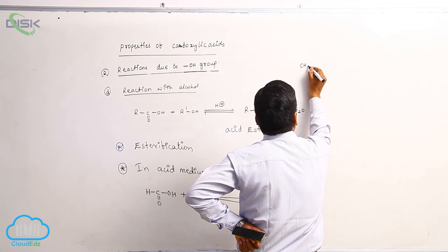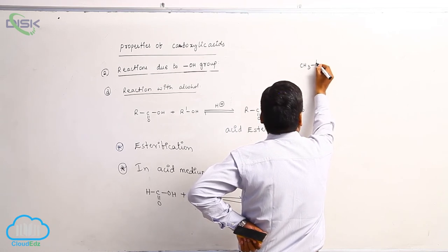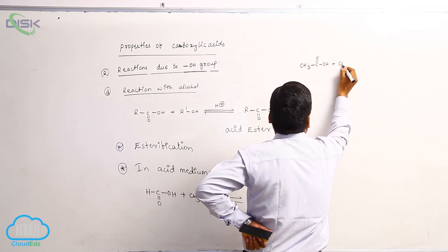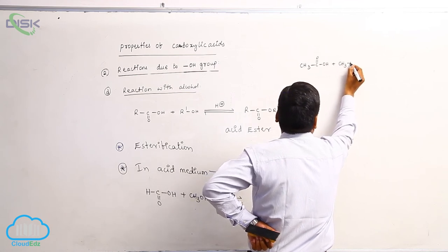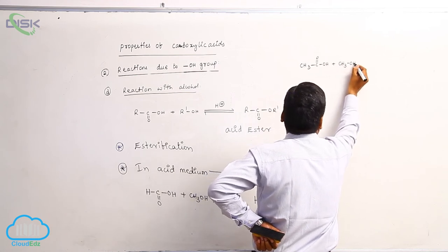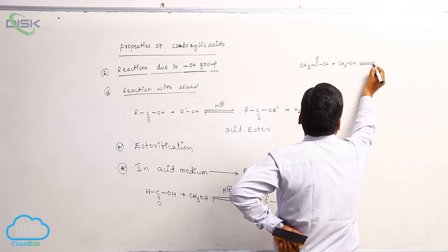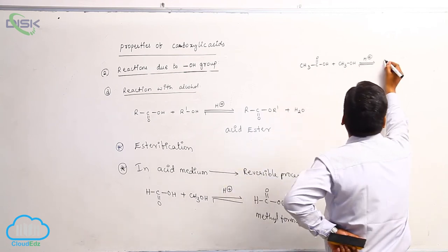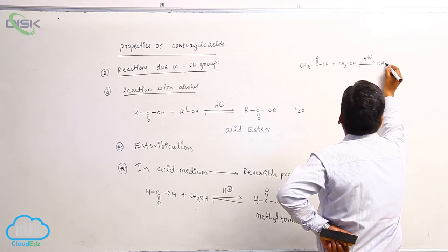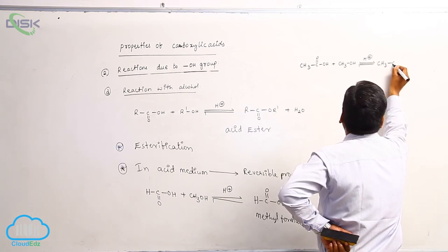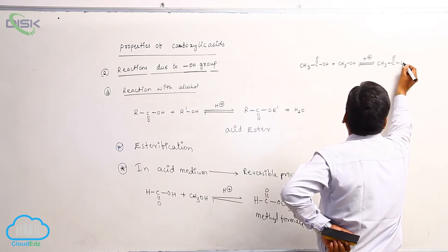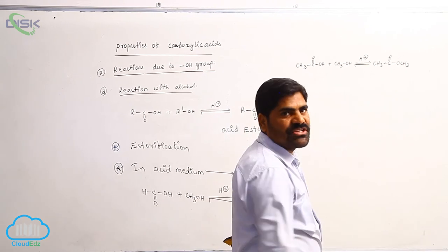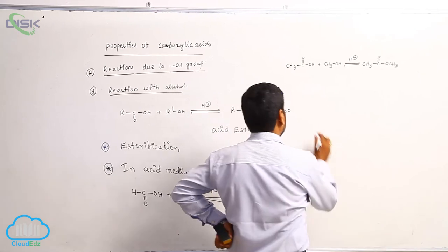Acetic acid reacts with methyl alcohol in acid medium to form methyl acetate.